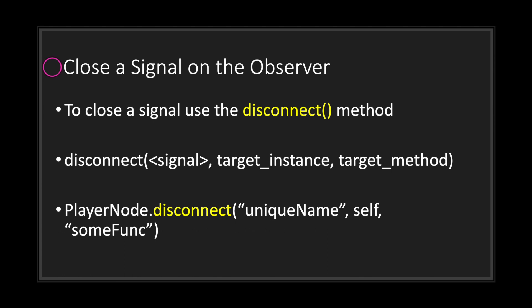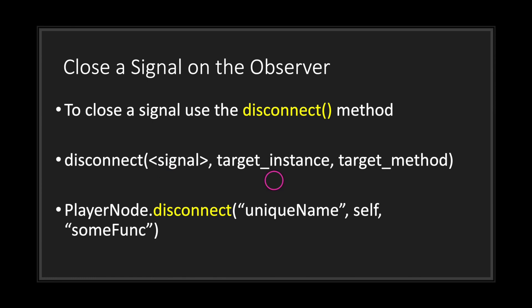When your observer no longer needs signals from the subject, use the disconnect method. It takes the exact same arguments as connect: first, the signal name as a string; second, the target instance using self; and third, the target method as a string. Call disconnect on the node variable: signal name, self, and the function name — after this your class will no longer receive or act upon signals from the subject.